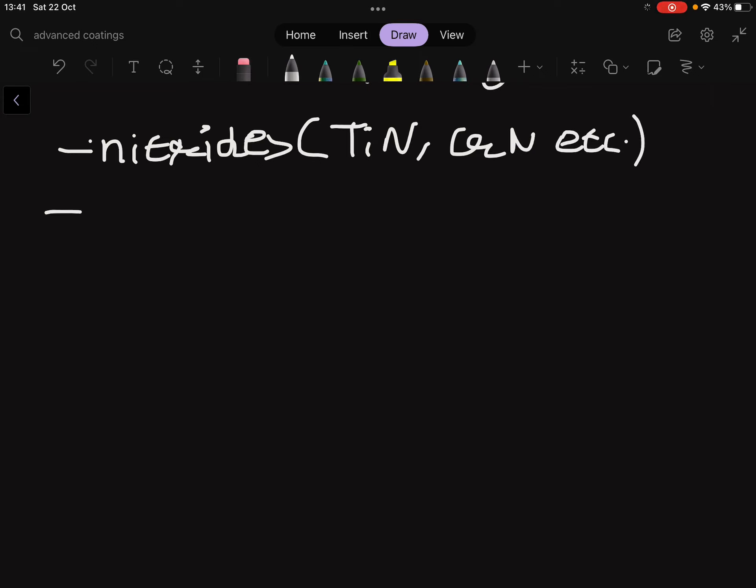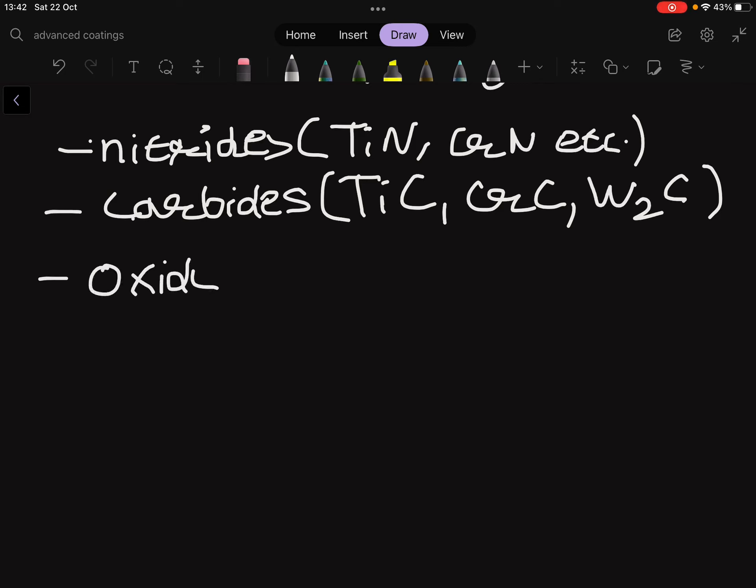Carbides, like titanium carbide, chromium carbide, tungsten carbide, and oxides, for example aluminum oxide, zirconium oxide, etc.